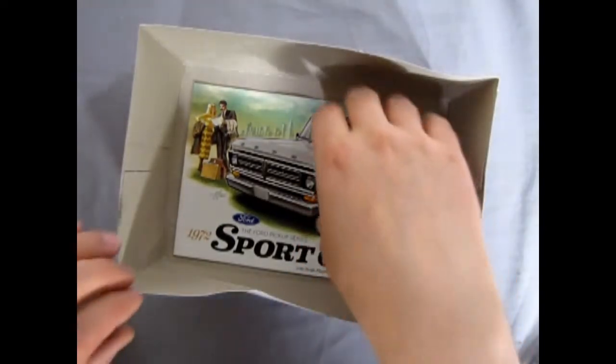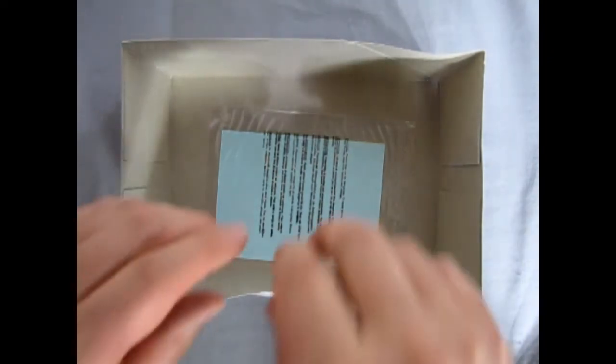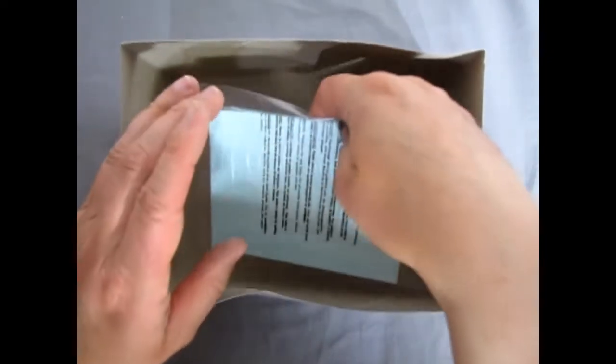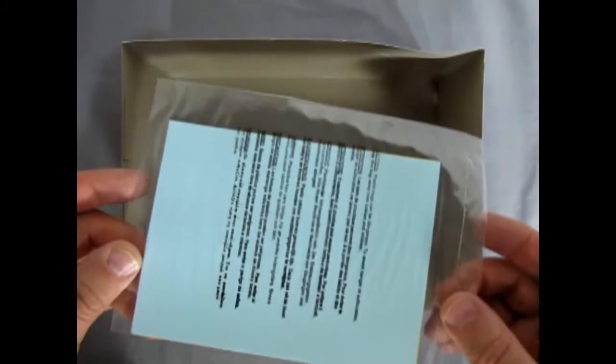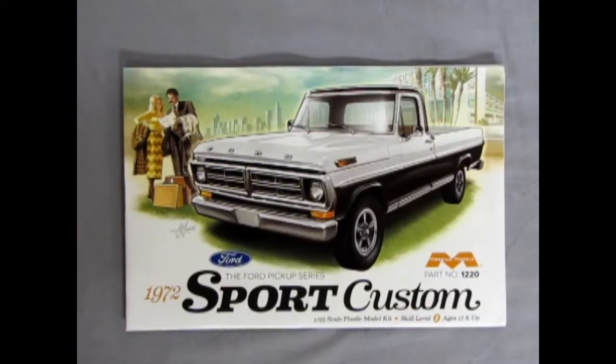Then we have our nice full color instruction sheet, followed by our decal sheet. And I won't turn this over till the end so that it's a big surprise. One thing I really enjoy with these Mobius model kits is of course the full color instruction sheets because they also give full color paint instructions as we will see.